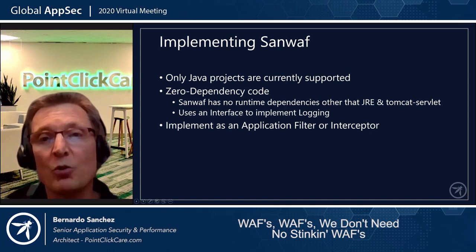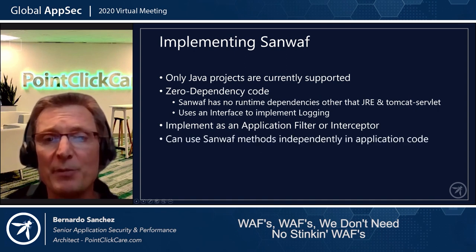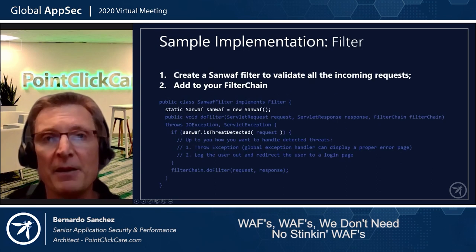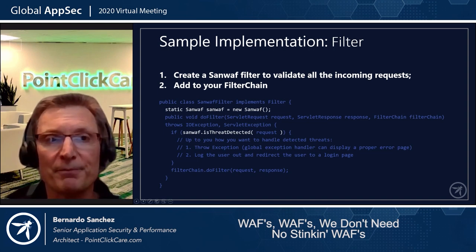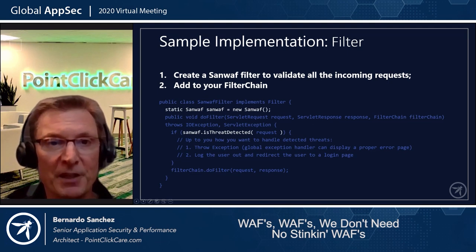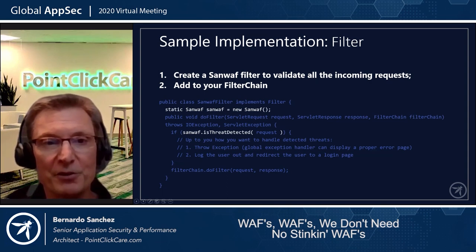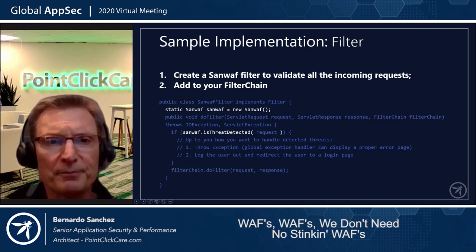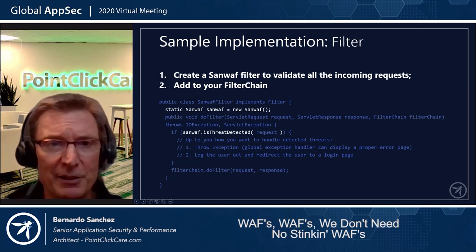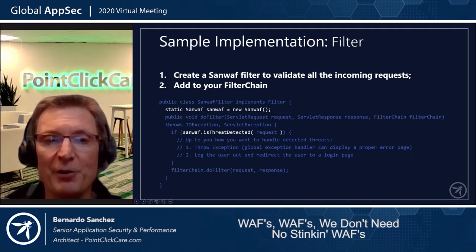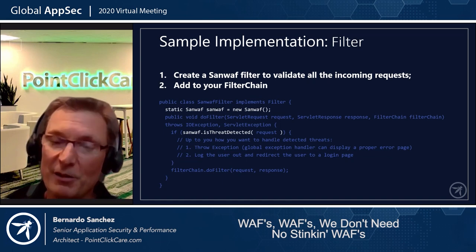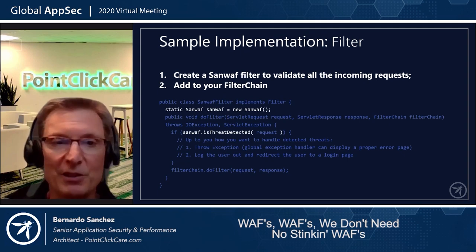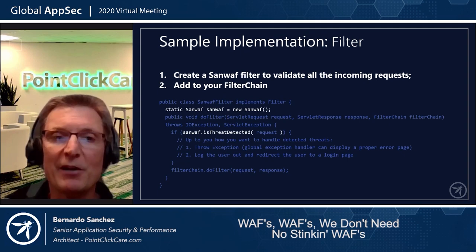SANWAF can be implemented as an application filter or interceptor. Here's an example of implementing a SANWAF filter: create a class 'SANWAFFilter implements Filter'. In the doFilter method, call 'sanwaf.isThreatDetected(request)'. If a threat is detected, it's up to you what to do. You can call 'sanwaf.getErrorMessages(request)' to get the errors in JSON format. Make sure to call 'filterChain.doFilter' at the very end. Instantiate SANWAF as a static instance: 'static Sanwaf sanwaf = new Sanwaf()'.